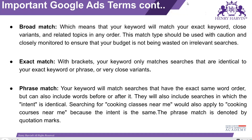Exact match is very simple. For exact match, you have to use brackets around the keyword. If you mention [running shoes] in brackets, then only when someone searches exactly 'running shoes' will they be able to see your ad. You have to mention the keyword in brackets to use exact match.